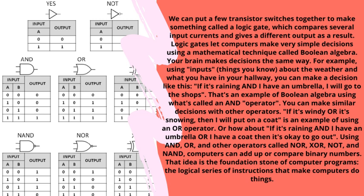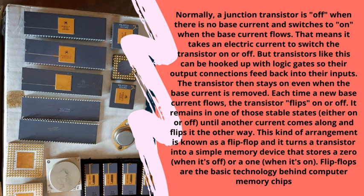Using AND, OR, and other operators — NOR, XOR, NOT, and NAND — computers can add up or compare binary numbers. That idea is the foundation of computer programs. Normally, a junction transistor is off when there is no base current and switches on when the base current flows. Transistors hooked up with logic gates so their output connections feed back into their inputs will stay on even when the base current is removed — each time a new base current flows, the transistor flips on or off. This arrangement is known as a flip-flop, which turns a transistor into a simple memory device storing a zero when off or a one when on. Flip-flops are the basic technology behind computer memory chips.